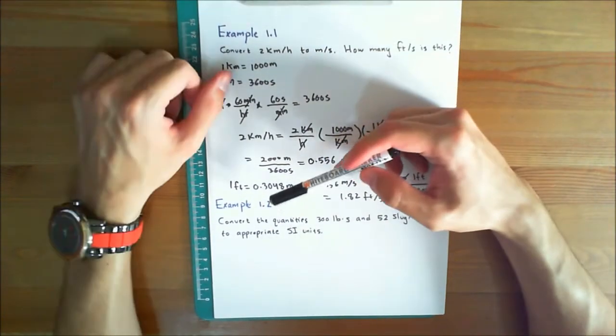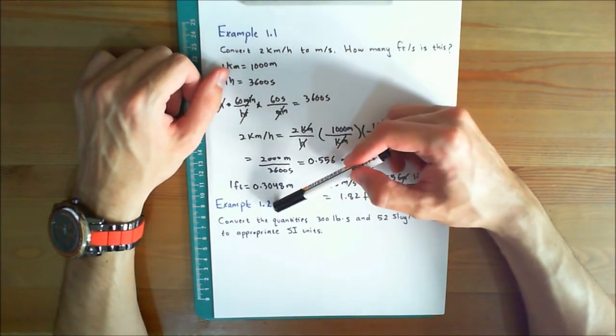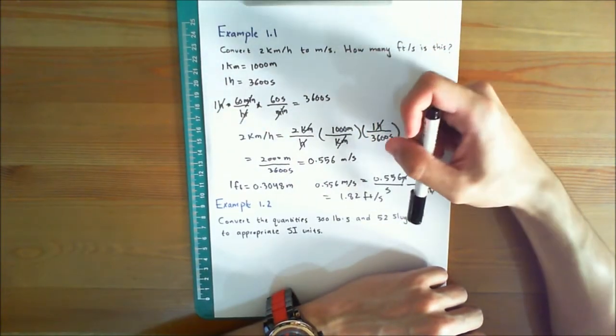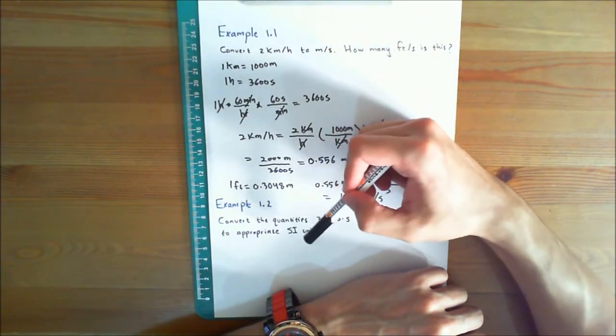Now let's solve an example problem. Example 1.2. Convert the quantities 300 pounds per second and 52 slug per feet cubed to appropriate significant figures.